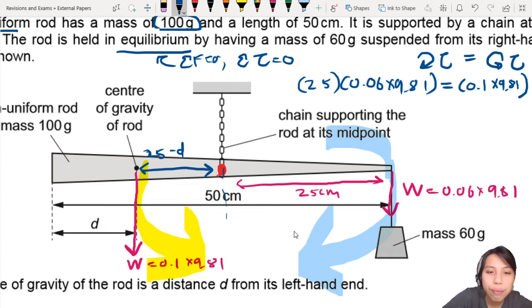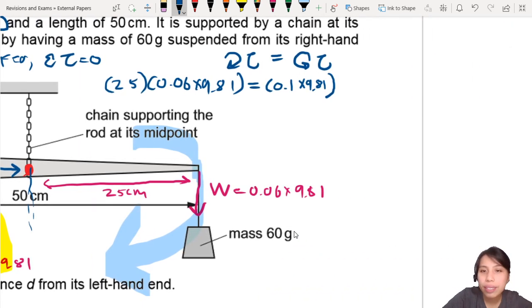25 is half of the rod. So 25 minus d will give you that length that we want. So we can write that as 25 minus d.